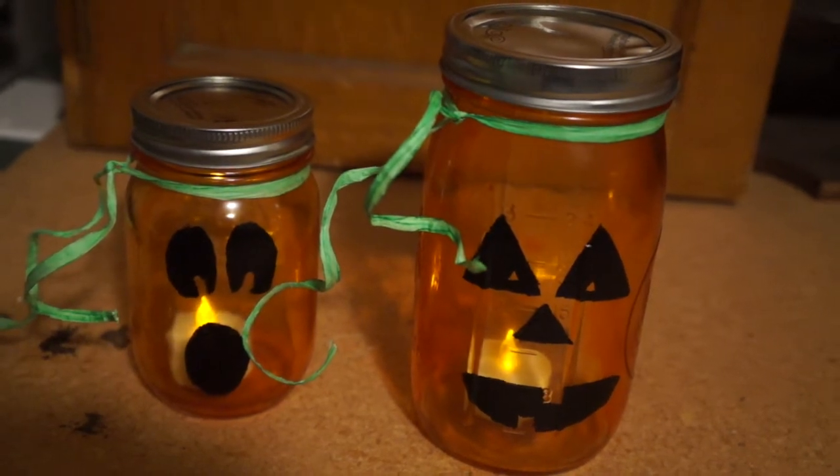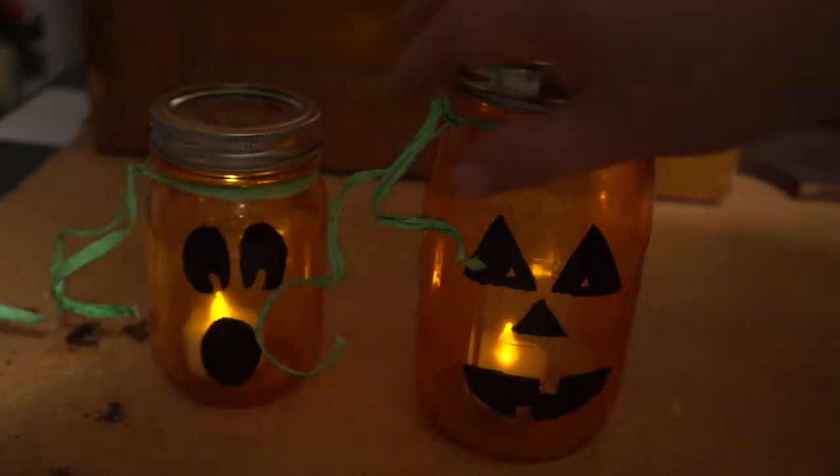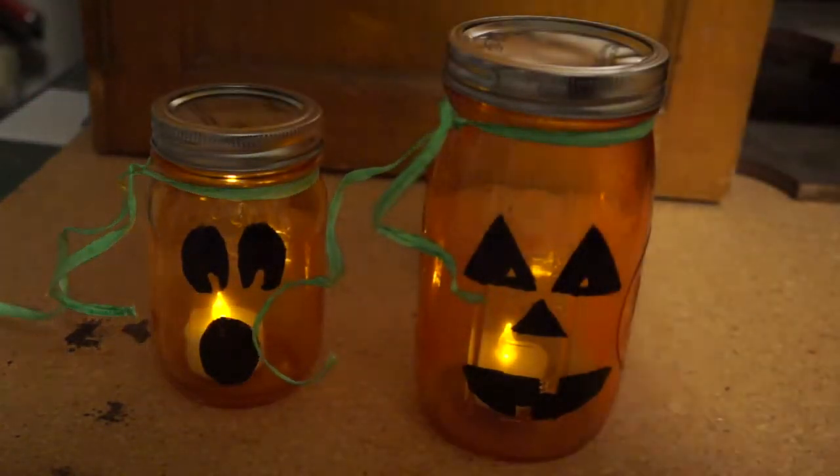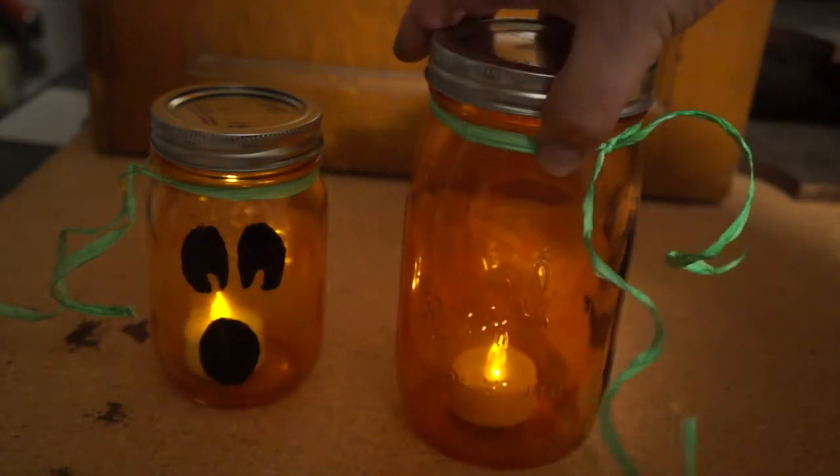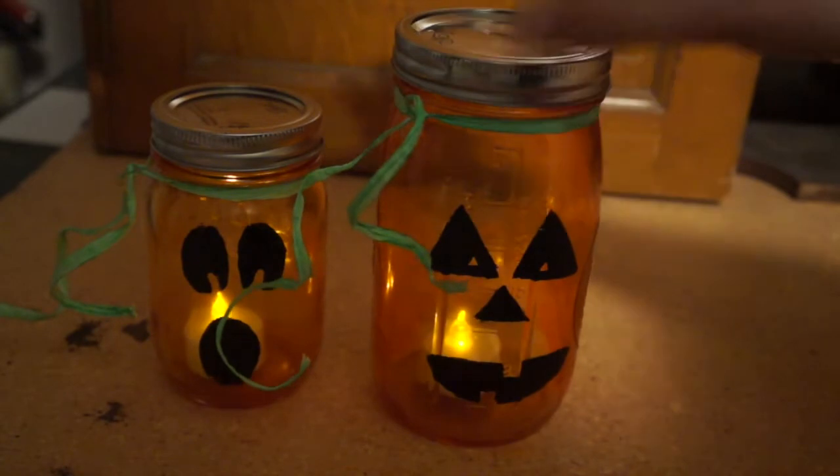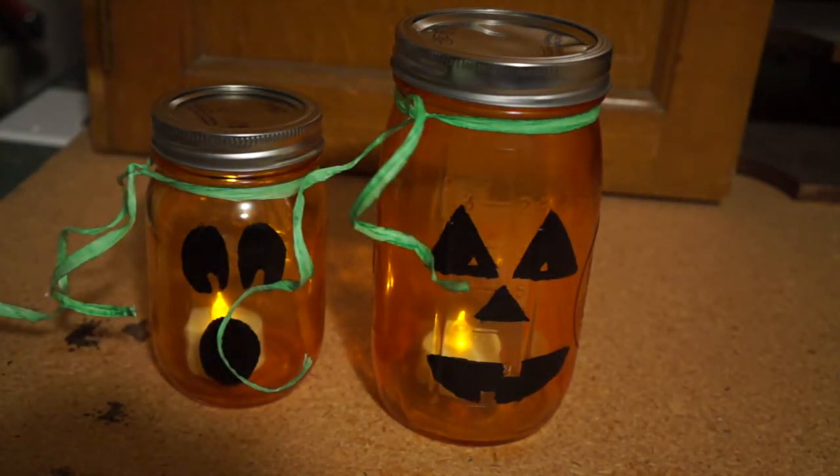We've completed our jack-o-lanterns. You can add some extra vines or embellish them however you want. Use a little battery-operated tea light. And they make great decorations for your Halloween party.